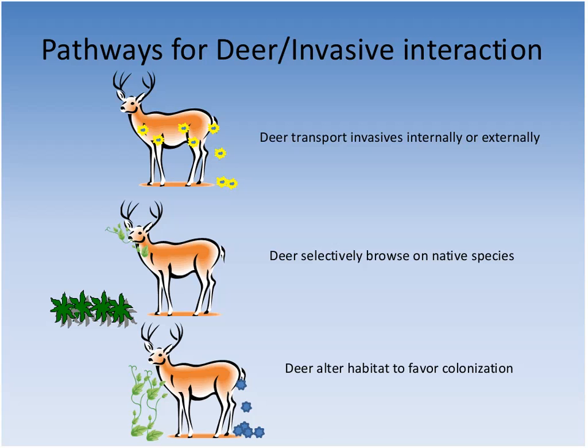The first study addresses a management question: should we control deer, control invasives, or both? We wanted to see whether doing one or the other gets the desired response, or whether both are necessary. A primary concern was that by removing invasives, you're effectively pointing out to deer where the native plants are that they prefer to eat — pulling Microstegium reveals native plants underneath that deer might not otherwise find.